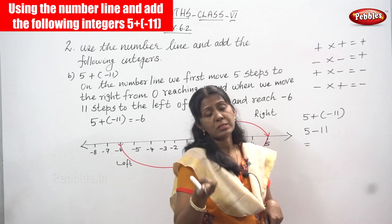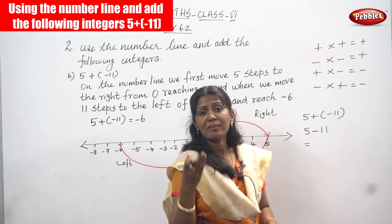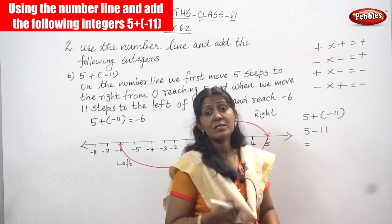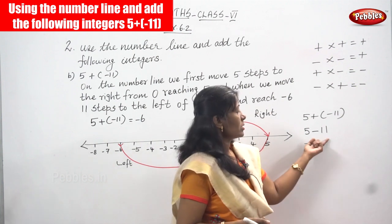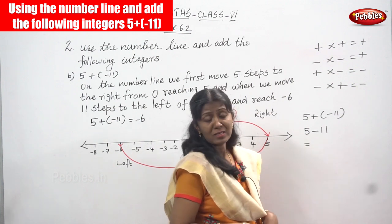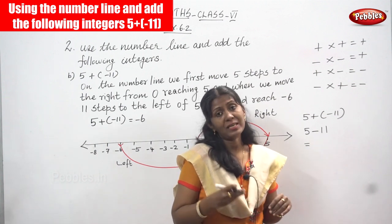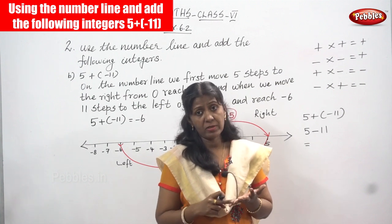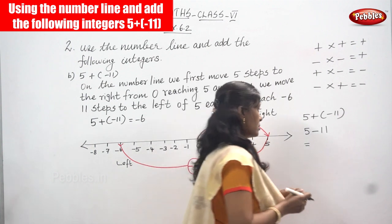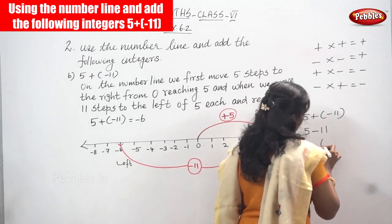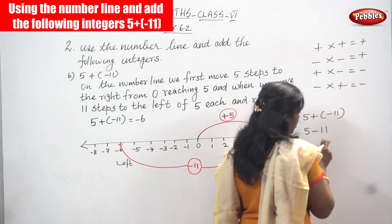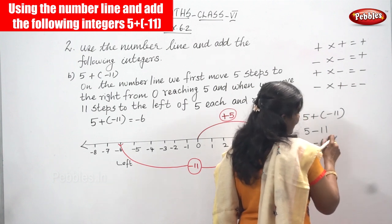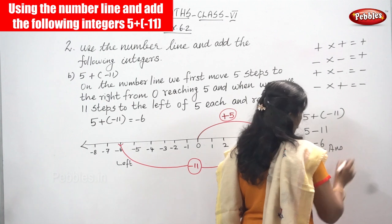You have to subtract from the bigger number. 11 is the bigger number, so 11 minus 5. You should not look at the sign — just look at the numbers. 11 is the bigger number and 5 is the smaller number. Subtract: 11 minus 5, counting back — 6, 7, 8, 9, 10, 11 — the answer is 6. Then you put the sign of the bigger number, which is minus, so the answer is minus 6.